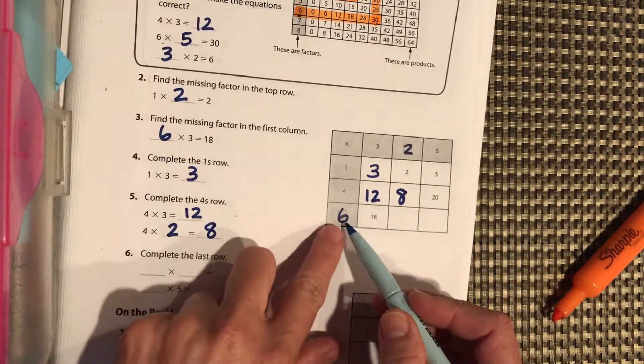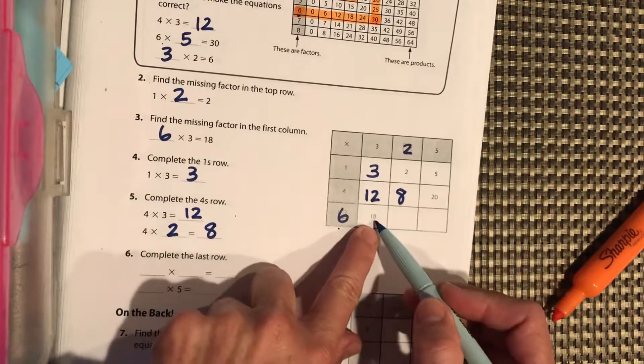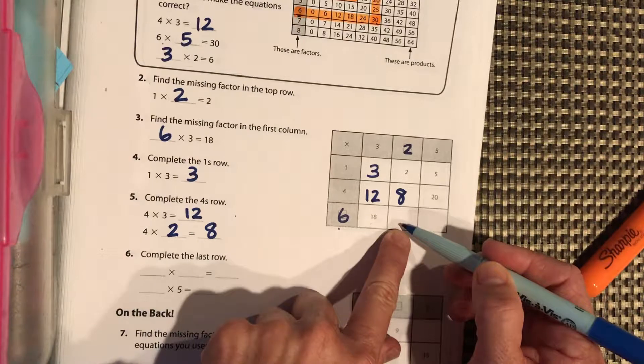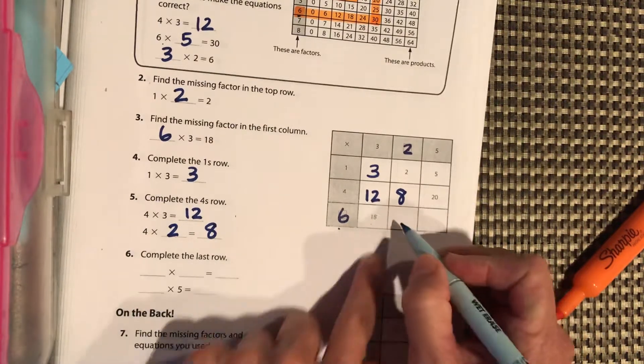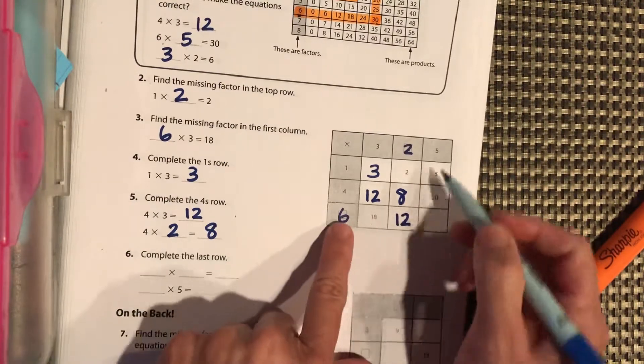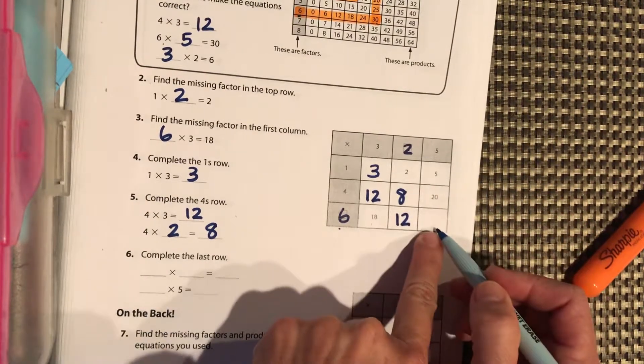And let's look at the last row. Okay, we know that 6 times 3 is 18. 6 times 2, what number will go here? It should be 12. And then 6 times 5, what number should go here?